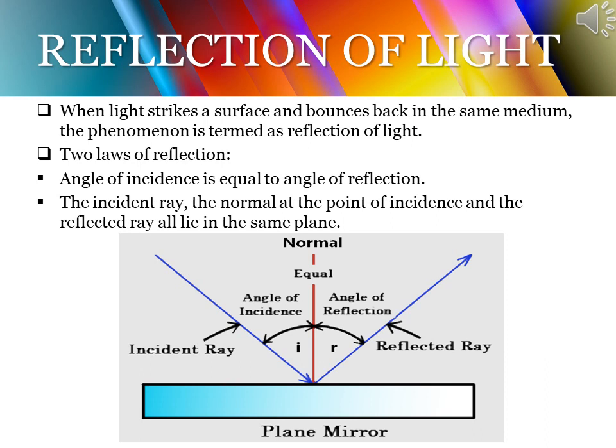Light always travels in a straight line, and this property is termed as rectilinear propagation of light. But the new phenomenon we are going to talk about is refraction, and according to that, light is going to bend. Isn't that a contrary statement to rectilinear propagation of light? So let's explore this new concept.